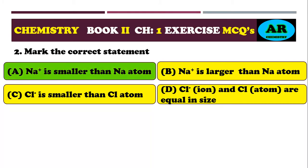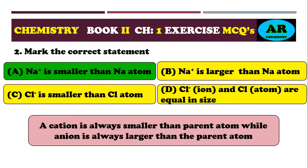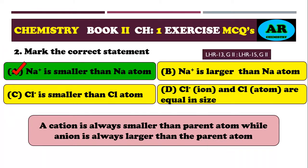The correct option is alpha. Na⁺ is smaller than Na atom because a cation is always smaller than the parent atom, while an anion is always larger than the parent atom. Na⁺ is a cation, so it is smaller than Na. The correct option is alpha.